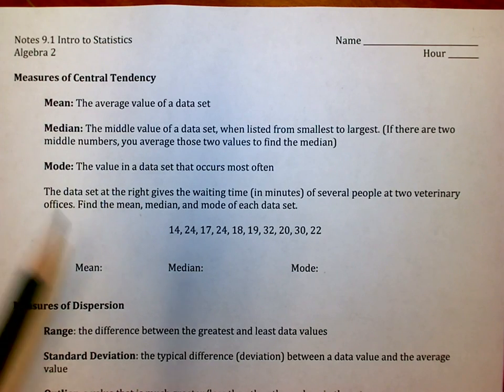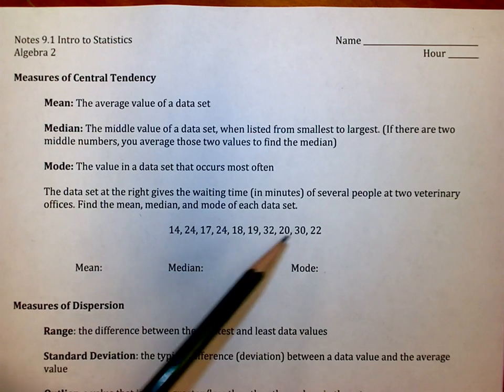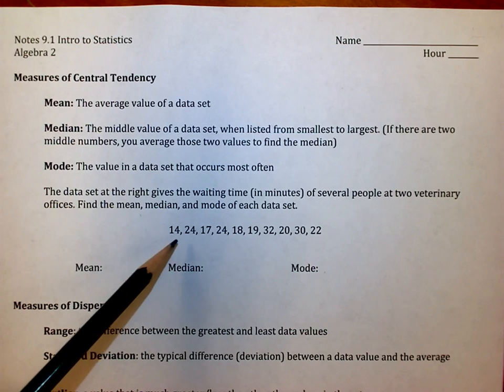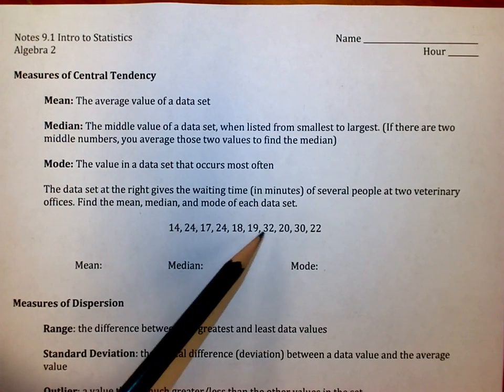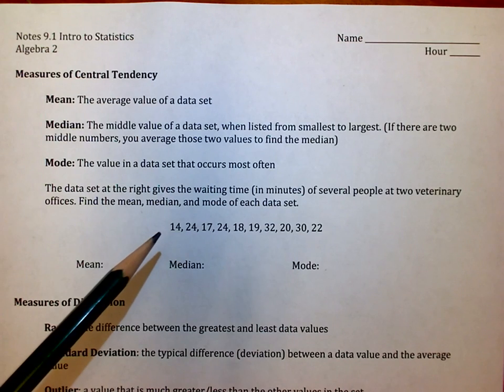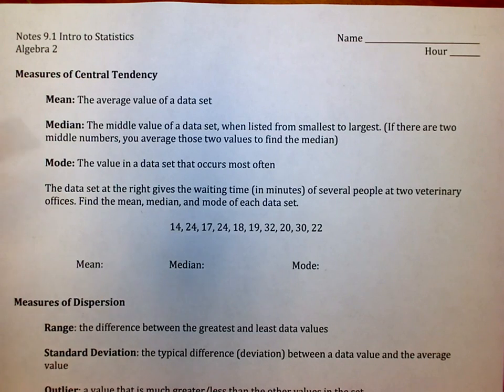If I wanted to do it by hand, for the mean I would add all these values up and divide by how many values we have. There's one, two, three, four, five, six, seven, eight, nine, ten. There's ten values. So I'm going to add them up and divide by ten.